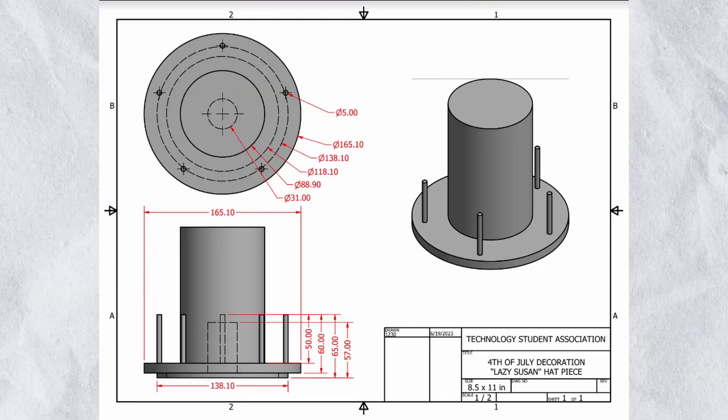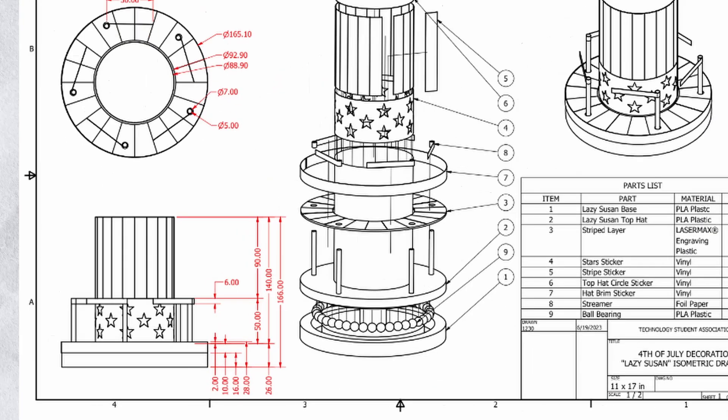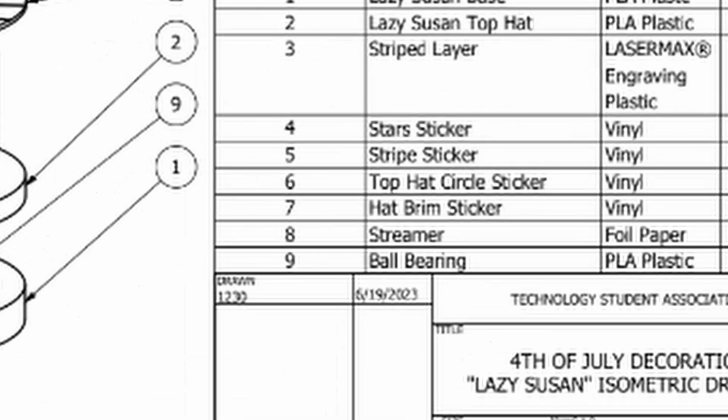You should have an assembly as well as unique part drawings for each part that is in your final product. Use multiple views for each part, use dimensions, make sure to show all lines, and of course include a scale.